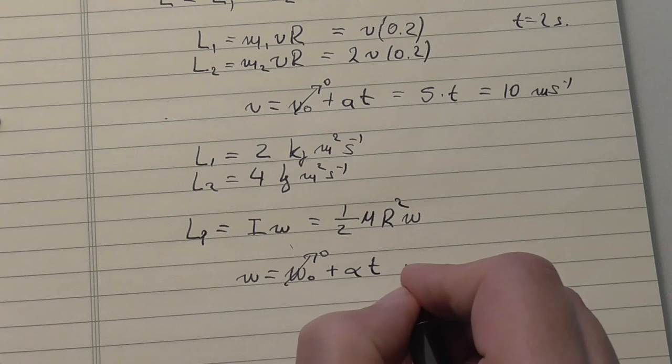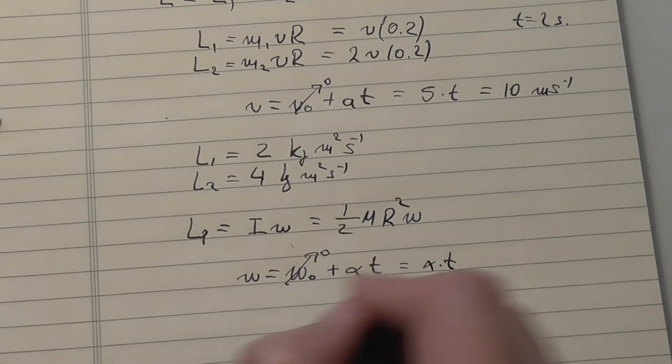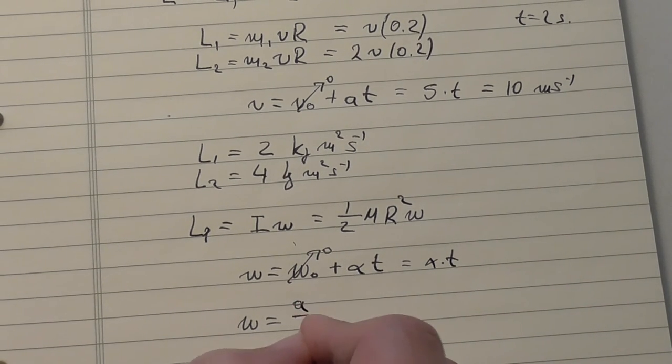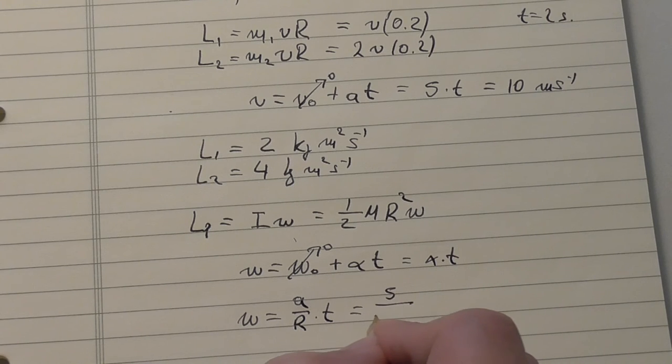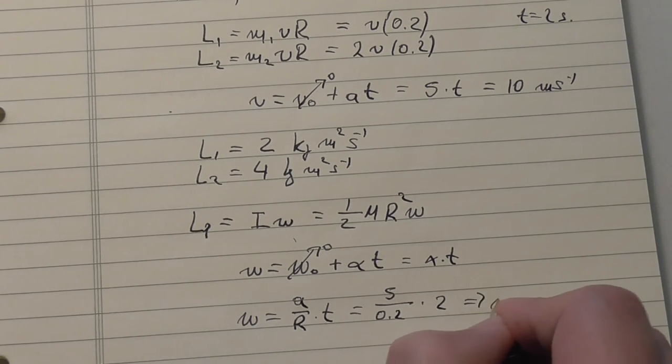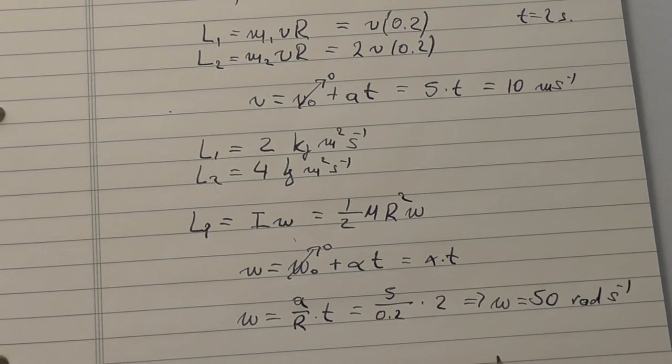Again, omega naught is 0, so omega is, well now the angular acceleration is a over r times t and putting the values there, so this is 5, this is 0.2, at 2 seconds, this is 50. The unit is radians per second.